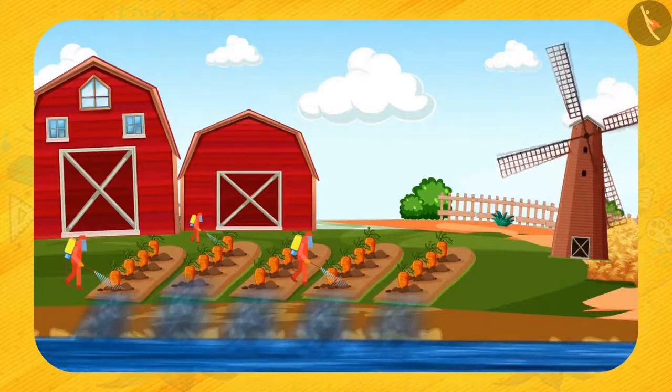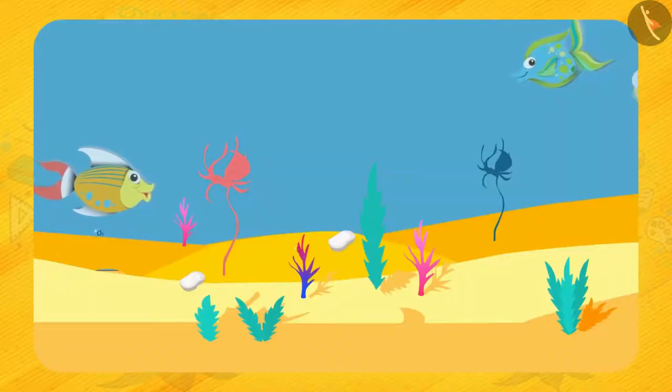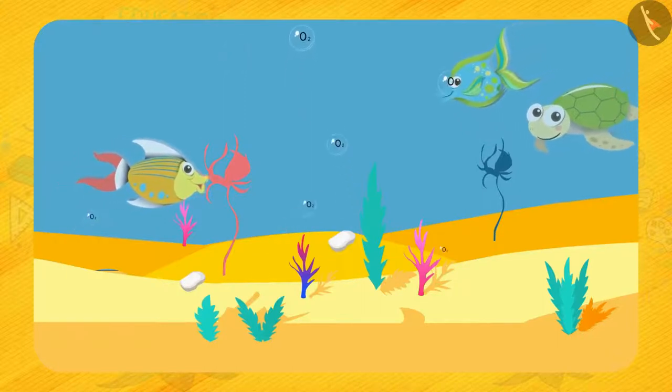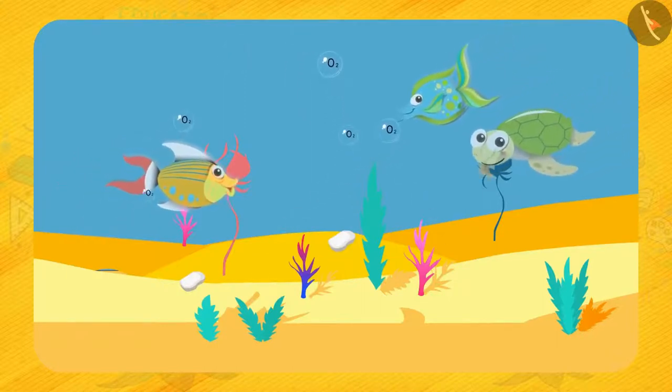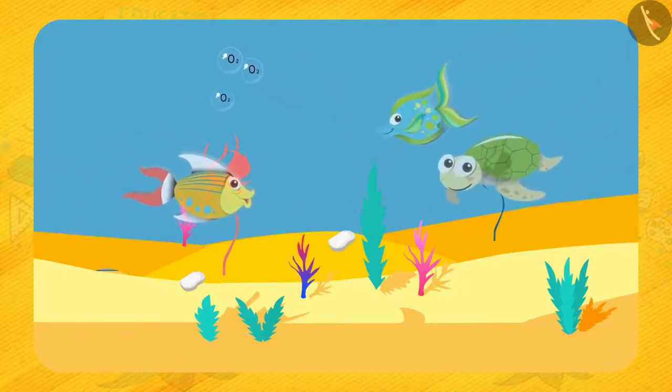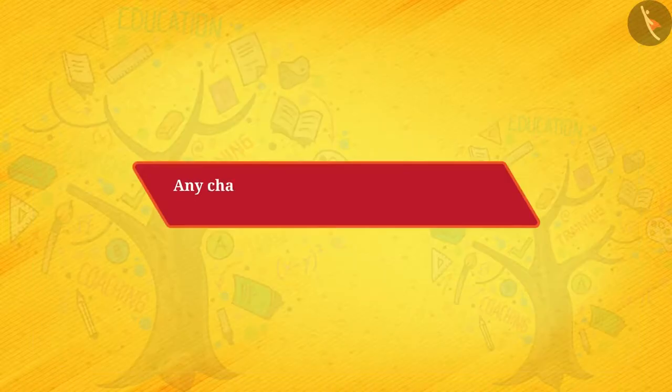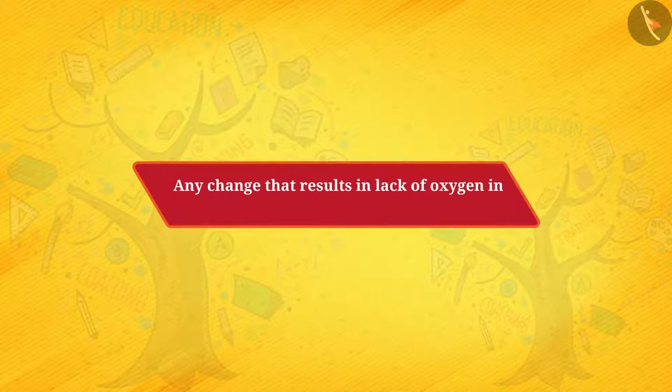Friends, what if useful substances like oxygen are removed from water? Just think, aquatic plants and animals will not get oxygen and they will die in the end. So any change that results in lack of oxygen in the water is considered water pollution.